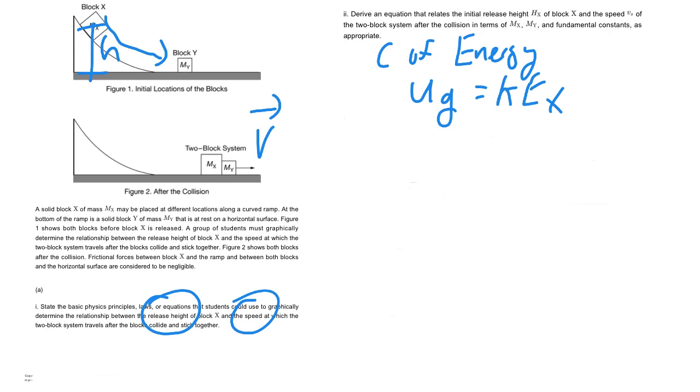Now once we've done that, then we can use conservation of momentum to figure out the combination. Because we know the momentum of block X should now equal the momentum of the XY combination afterwards. So that's question one, essentially setting up what are the concepts that you're going to be using for this. The second part then is to actually derive this equation.